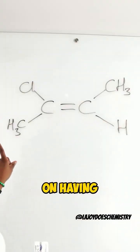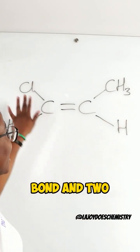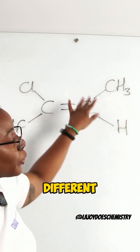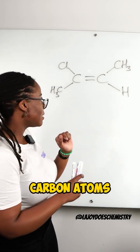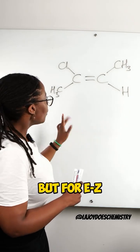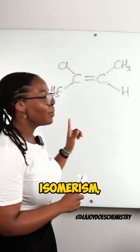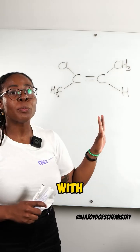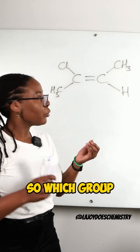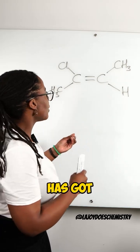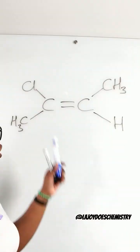They both rely on having a carbon-carbon double bond and two different groups on each of those carbon atoms. But for EZ isomerism, we're dealing with priorities — which group has got the greater atomic number?